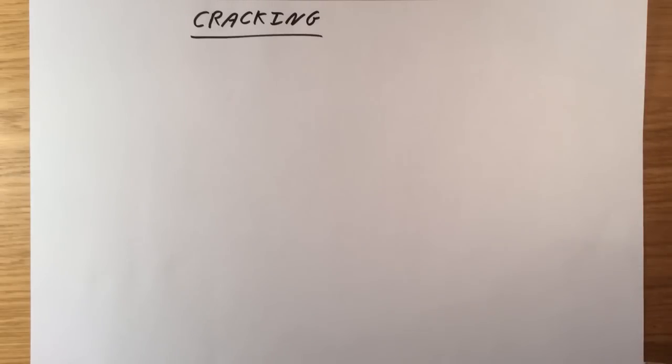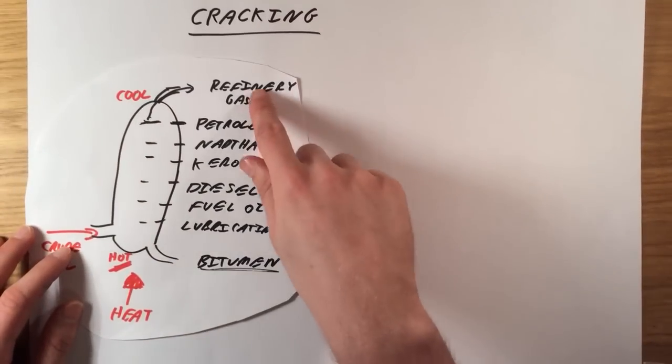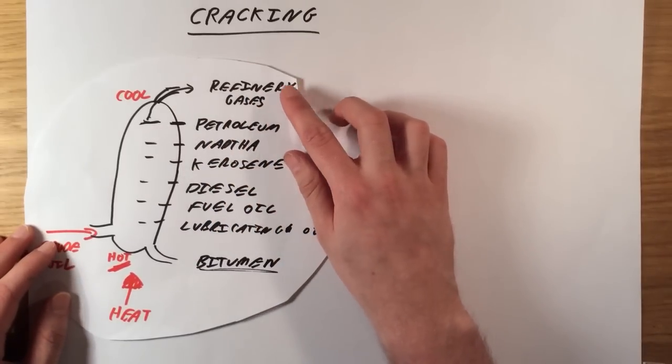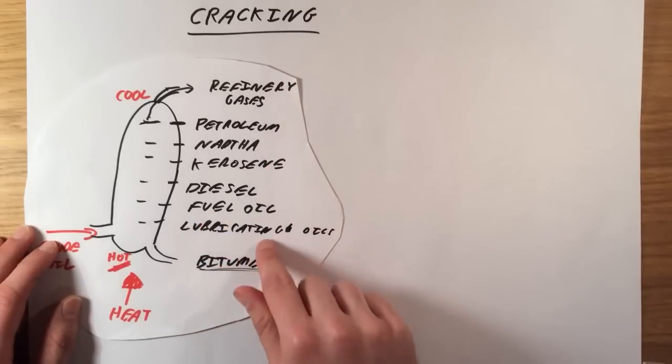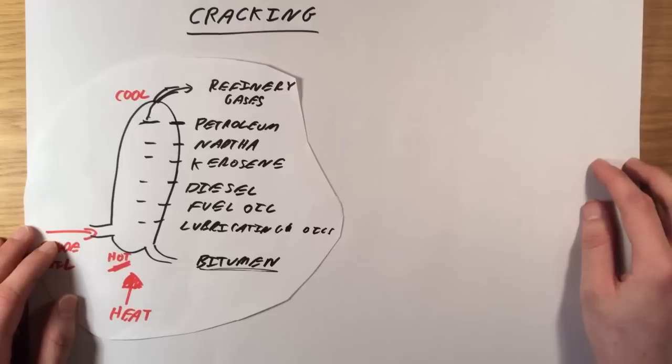We said in our video on fractional distillation that the different fractions have different flammabilities. The short fractions that we obtain from the top of a fractionating column are very flammable. They burn very easily and are very useful as fuels. The ones on the bottom of our column are much less flammable and therefore not as useful.